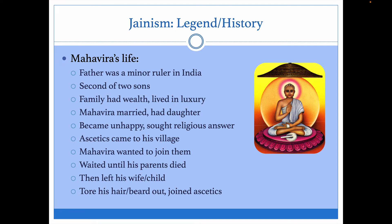The Mahavira's life: his father was a minor ruler in India, he was the second of two sons, his family had wealth, and he grew up in luxury — much like the Buddha's story. The Mahavira ended up marrying and had a daughter; the Buddha also had a child. And like the Buddha, the Mahavira was unhappy and sought a religious answer.